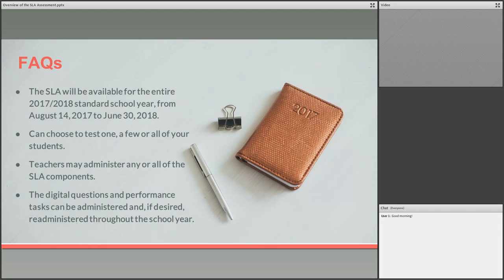I pulled a few frequently asked questions. The first important one this year is that they are keeping the SLAs available for the entire school year, right up until June 30th. That means you have lots of flexibility on whether you test students right away, whether you want to retest them, or even consider testing grade twos at the end of the school year. This buys us lots of options.